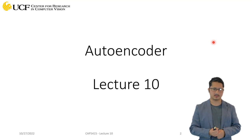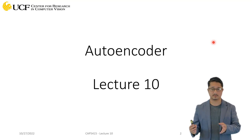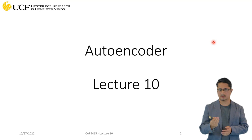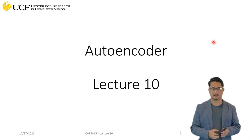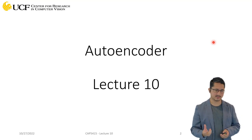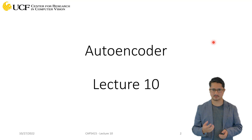There are a lot of different ways to extract features in deep learning as well. Autoencoder is one of them, and it's one of the simplest ways. So we'll start with this.